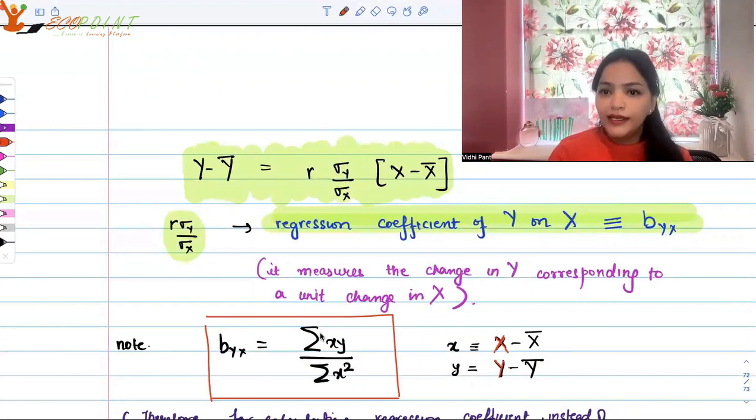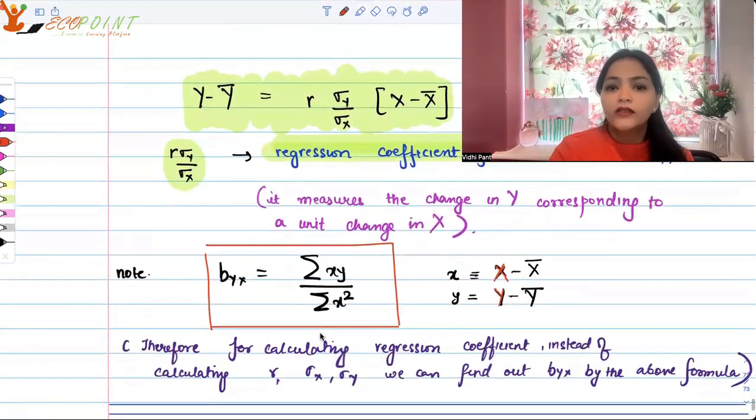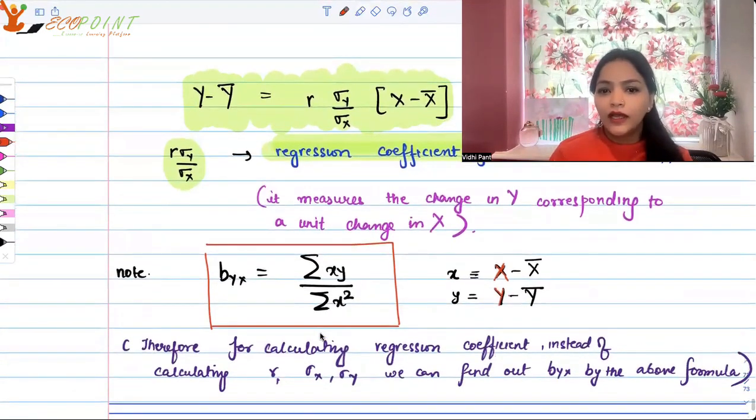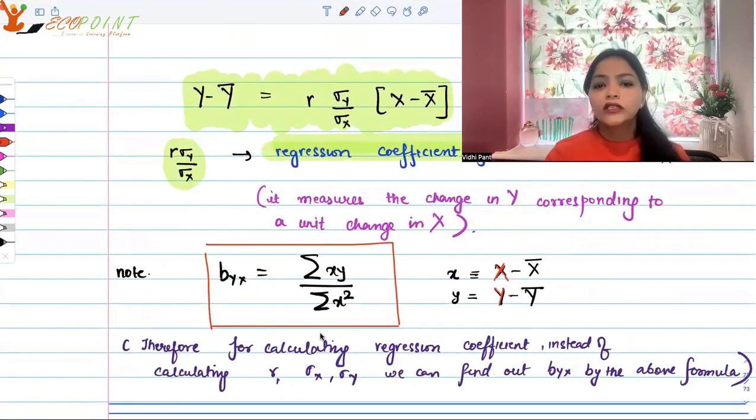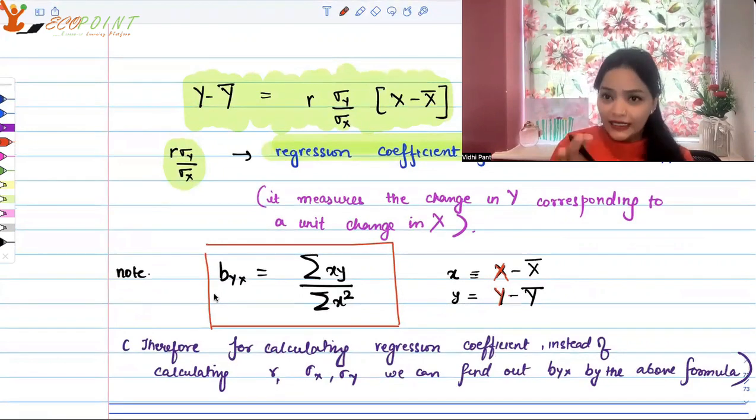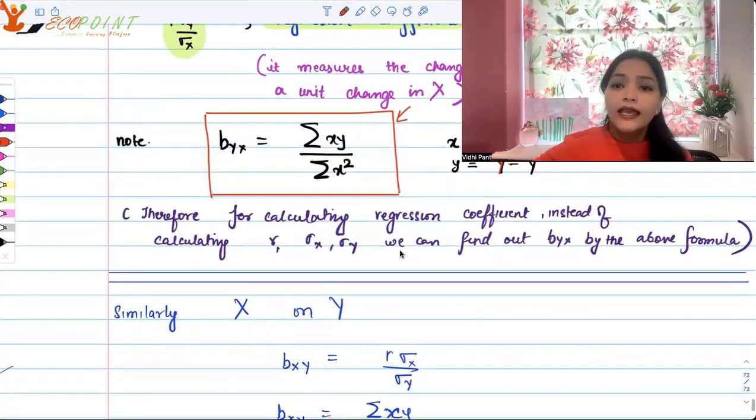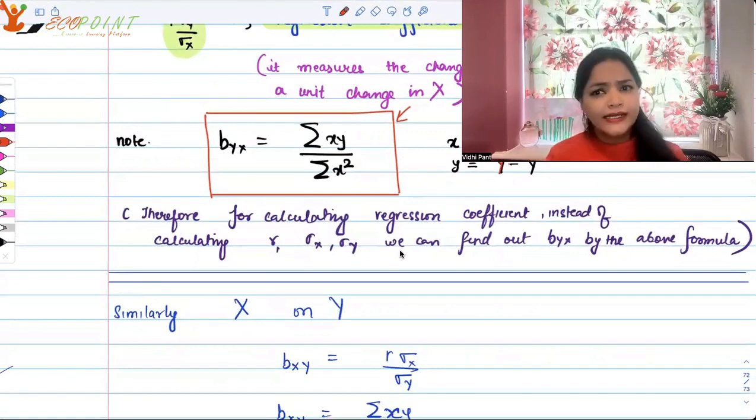Now note that there is another very important thing that you need to note, which is that b_yx could be given as summation xy upon summation x squared. Where this lowercase x is basically all the deviations of x from x bar, and y which we have written here is all the deviations of y from y bar, its average. So this is the same thing.